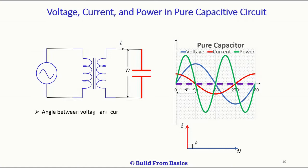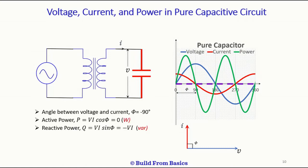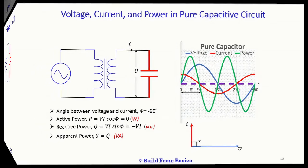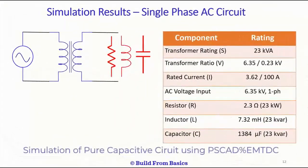Looking at the equations for active and reactive power: the angle between voltage and current is minus 90 degrees. Therefore, active power P = VI cos(−90°) = zero watts. Reactive power Q = −VI, because sin(−90°) = −1. Finally, the apparent power S is equivalent to the reactive power. This is similar to the inductive circuit, and the circuit element values are shown in the table.